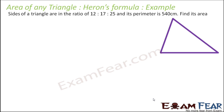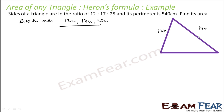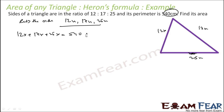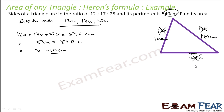Now we solve a problem where the sides are given in ratio. Let the sides be 12x, 17x, and 25x. The perimeter is given as 540 cm. So 12x + 17x + 25x = 54x = 540 cm, giving x = 10 cm. Therefore the sides are 120 cm, 170 cm, and 250 cm.